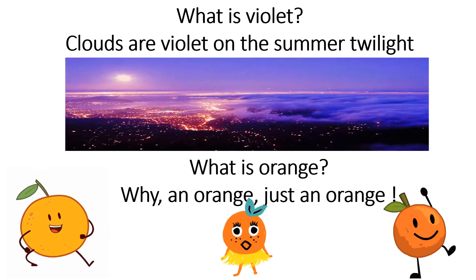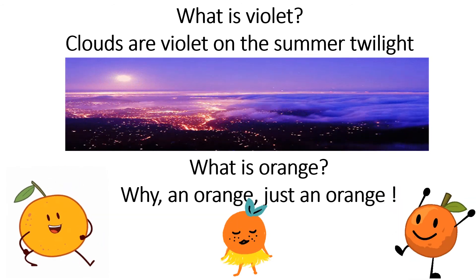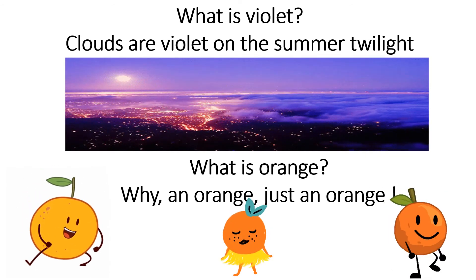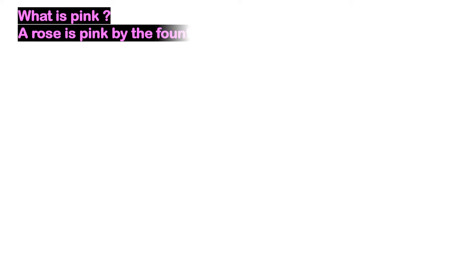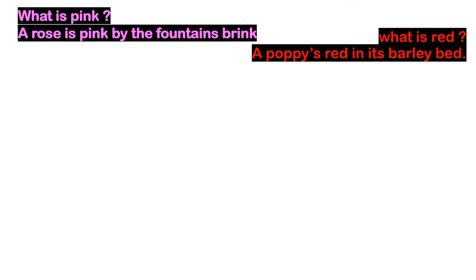So this is your poem — Why an Orange, Just an Orange. Now let us read the poem once again, the full poem. Repeat after me: What is pink? A rose is pink by the fountain's brink. What is red? A poppy is red in its barley bed.